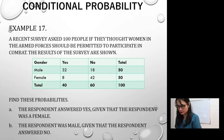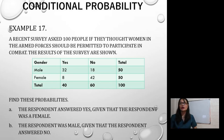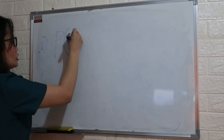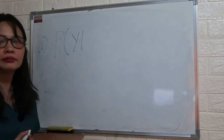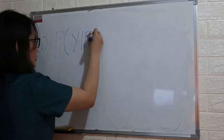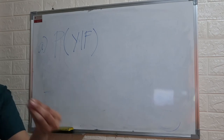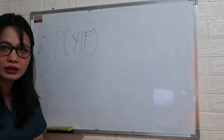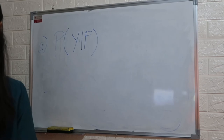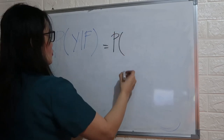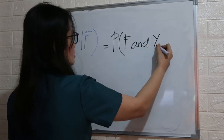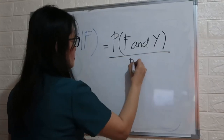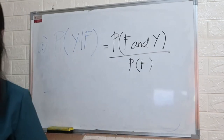Letter A: find the probability that the respondent answered yes given that the respondent was a female. To answer that: probability of female and who said yes over the probability of female.